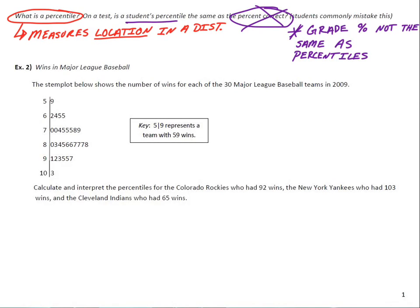So our objective is to calculate and interpret the percentiles for the Colorado Rockies. That was a 92-win team. The Yankees, they were the 103-win team. They were at the top that year. And the Cleveland Indians, who had 65 wins. So I'm going to actually color code these. I got purple for the Rockies. I got black for the Yankees and red for the Indians. So I think that pretty much corresponds to their team colors in real life. So let's start by just circling these teams, identifying them on the stem and leaf plot. So the 92-win team, the Rockies go to the 90s there. They must be with the two. So there's our Colorado Rockies, the 92-win team.